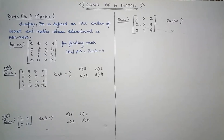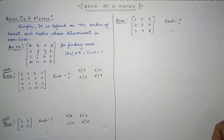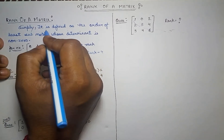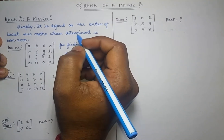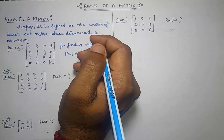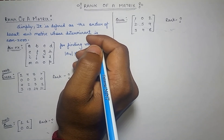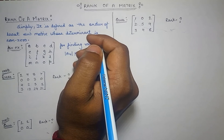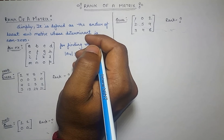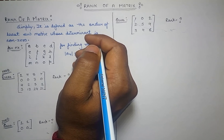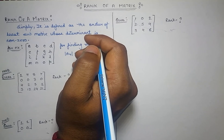In this video we are going to learn about the rank of a matrix — how you can find the rank of a particular given matrix. The rank is defined as the order of the largest sub-matrix whose determinant is nonzero. To find the rank, we find the determinant; if the determinant is 0 then we find the determinant of a sub-matrix or minors, but if the determinant is not 0 then whatever the order of the matrix is, that will be the rank.